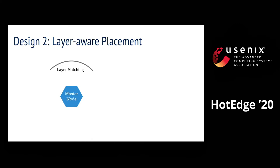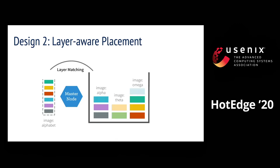Given these findings, we argue that the container image layer should be treated as the unit of dependency, and the master node should perform dependency matching over layers. This leads to our second design: instead of making the master node aware of image locality, let's make it aware of layer locality. When a container request is submitted, we identify what layers are inside the image and match the layers on the nodes, picking the node with the largest total size of matched layers, then schedule the container to that node. This provides content-addressable and fine-grained matching for dependency locality.